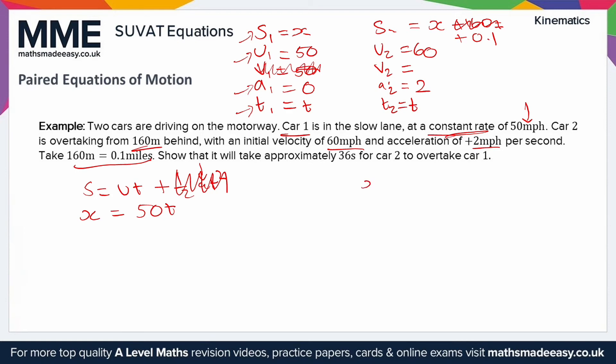It's not going to be quite as simple for the other one. We've got S, U, A, and T, so again we're going to use S equals UT plus a half AT squared. We're going to have x plus 0.1 equals UT, so 60T, plus a half AT. Half of 2 is 1, so plus T squared, because half A, A is 2, so half times 2 is 1, so it's just T squared.